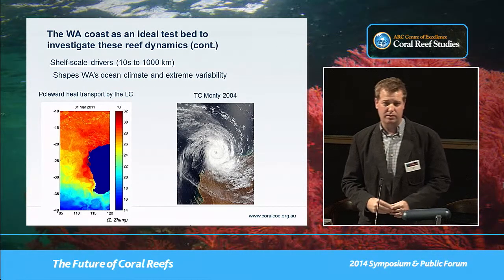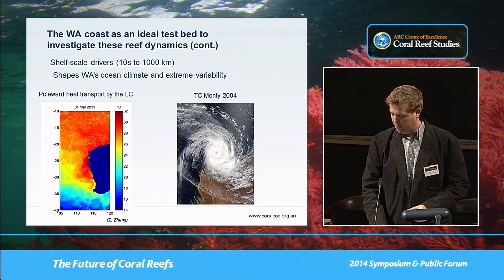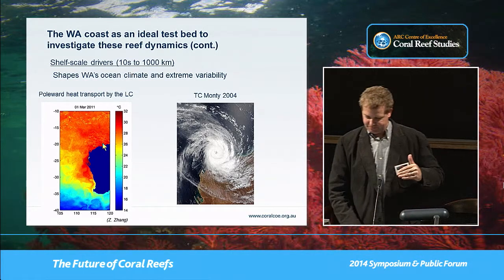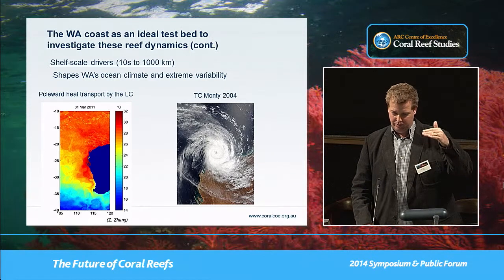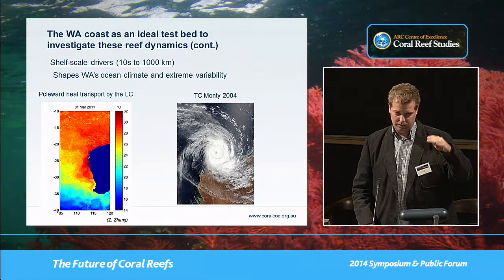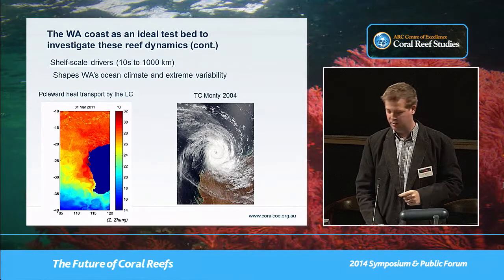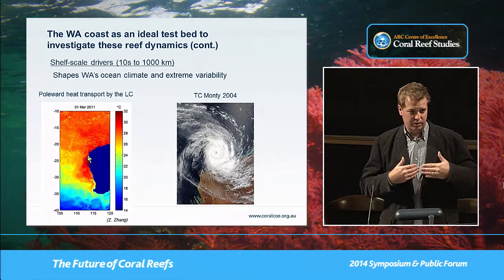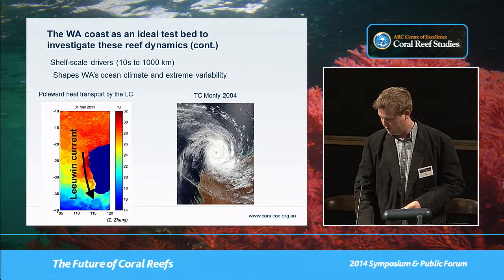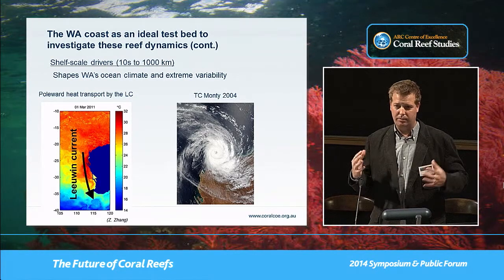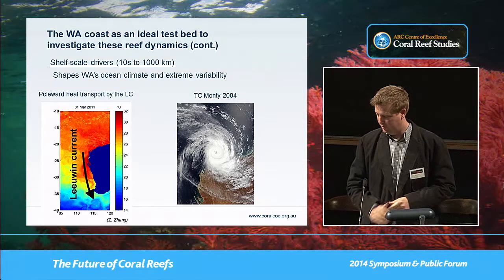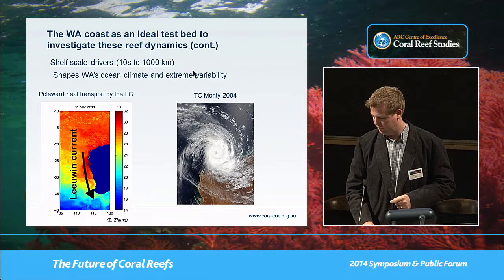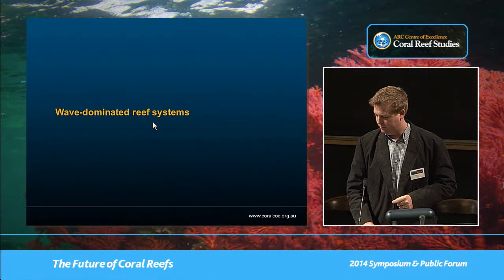At the shelf scale, there are ocean boundary current systems like the Lewin current, which is important because it transports heat down the coastline, really setting up the marine climate along Western Australia. There are also shelf-scale processes that drive extreme variability at these scales.